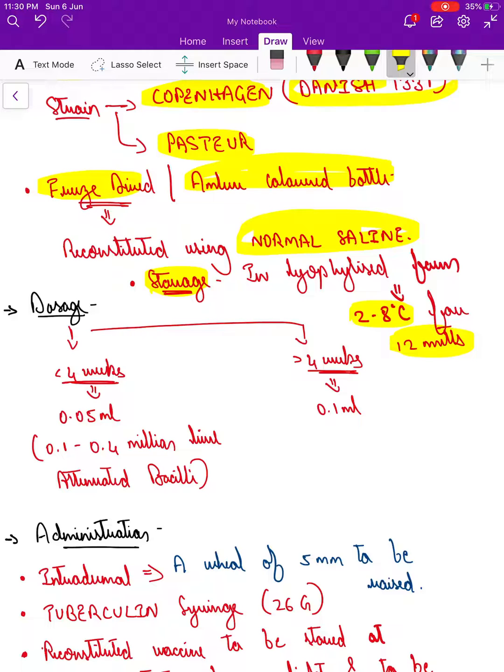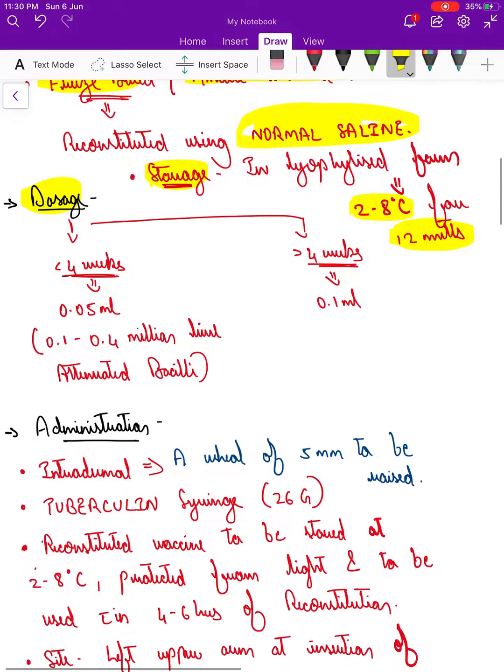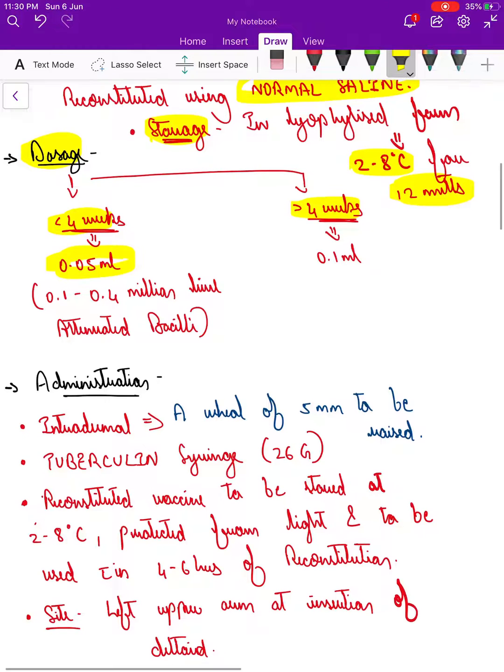Coming to the dosage: if it is less than 4 weeks, we give 0.05 ml, which contains 0.1 to 0.4 million live attenuated bacilli. If it is greater than 4 weeks, then we give 0.1 ml.